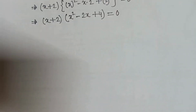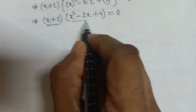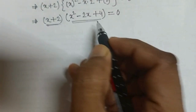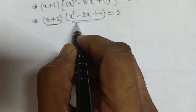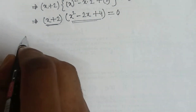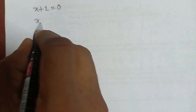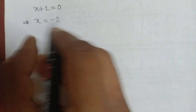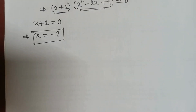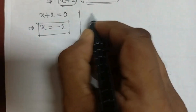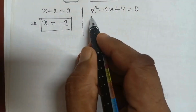So x plus 2 into x squared minus 2x plus 4 equals 0. We get two expressions: x plus 2 equals 0, giving x equals negative 2, or x squared minus 2x plus 4 equals 0, which is a quadratic equation.